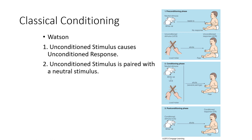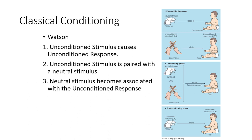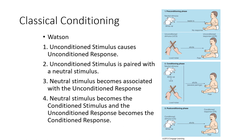Then the unconditioned stimulus — the loud noise — is paired with the neutral stimulus, the white rat. Every time Little Albert sees the white rat, a loud noise is made. The neutral stimulus becomes associated with the unconditioned response: because every time he sees the white rat he experiences fear from the noise, internally that fear starts to become associated with the white rat. The neutral stimulus becomes the conditioned stimulus — the white rat — and the unconditioned response becomes the conditioned response, which is the fear.